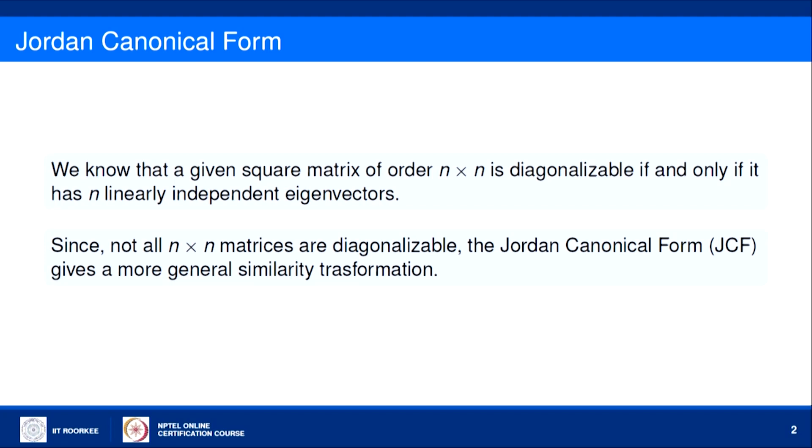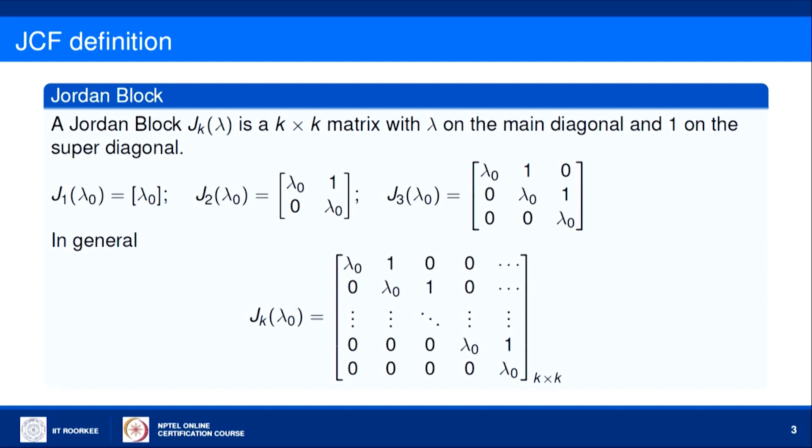If the matrix is not diagonalizable — meaning it does not have N linearly independent eigenvectors — then how do we find a similar transformation? We want to write the matrix as P·J·P⁻¹ where J is a block diagonal matrix. If the matrix is diagonalizable, we write P·D·P⁻¹; if not, we write P·J·P⁻¹. For doing this, we need to talk about Jordan blocks.